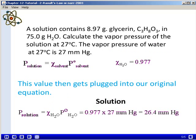We are now ready to plug this value into our expression for Raoult's Law. We have the mole fraction of the solvent is equal to 0.977, and we know the vapor pressure of the pure solvent is 27 millimeters of mercury. We multiply these two values together. We find that the vapor pressure of the solution is 26.4 millimeters of mercury.